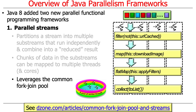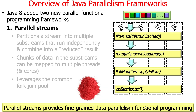The parallel streams framework leverages the fork-join framework under the hood to run the various chunks in parallel. You don't get exposed to the fork-join pool when you use parallel streams, but that's what's being used. It's a good example of systematic reuse — the parallel streams framework, a functional programming parallelism model, leverages the older fork-join pool, an object-oriented model.